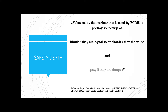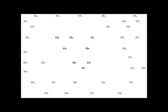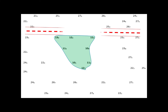We know the rules. Let's draw a no-go area. Looks like everything is fine — the depths considered dangerous were included in the no-go area. The question is: does the accuracy of the chart allow us to prepare a route close to our no-go area?